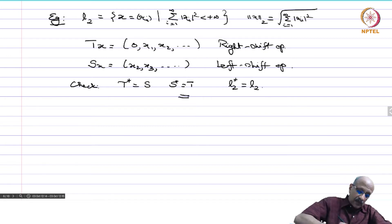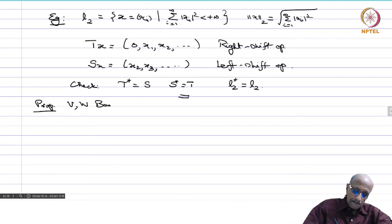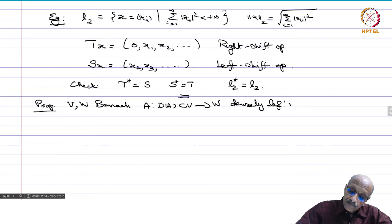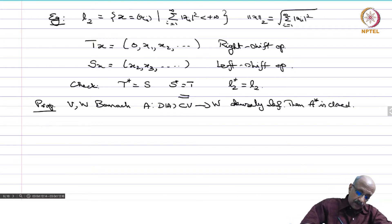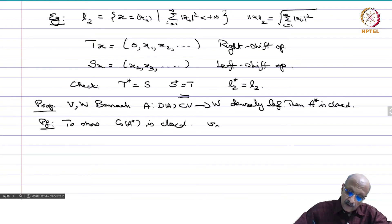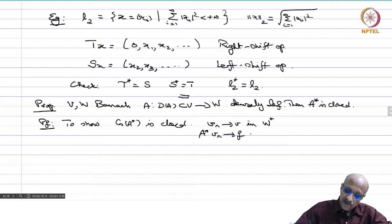Now we will look at some properties of the adjoint. The first important property: if V, W are Banach spaces, A from D(A) ⊆ V into W is densely defined, and the adjoint is defined, then A* is closed. Proof: to show the graph of A* is closed, we take vₙ converging to v in W* and A*vₙ converging to f in V*.